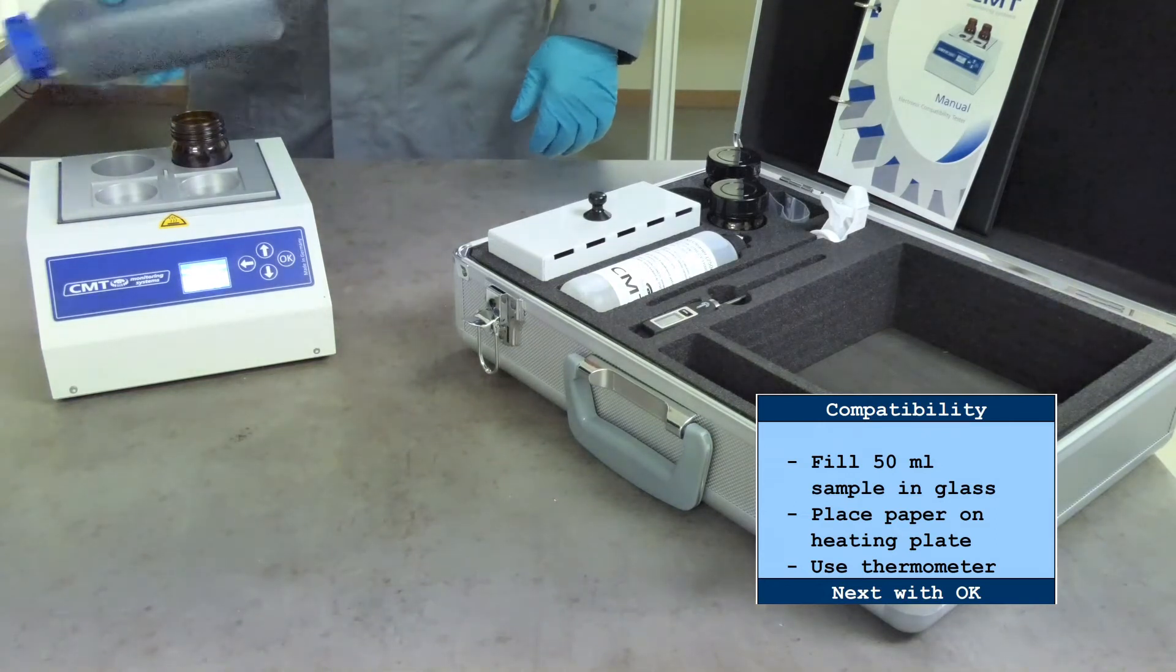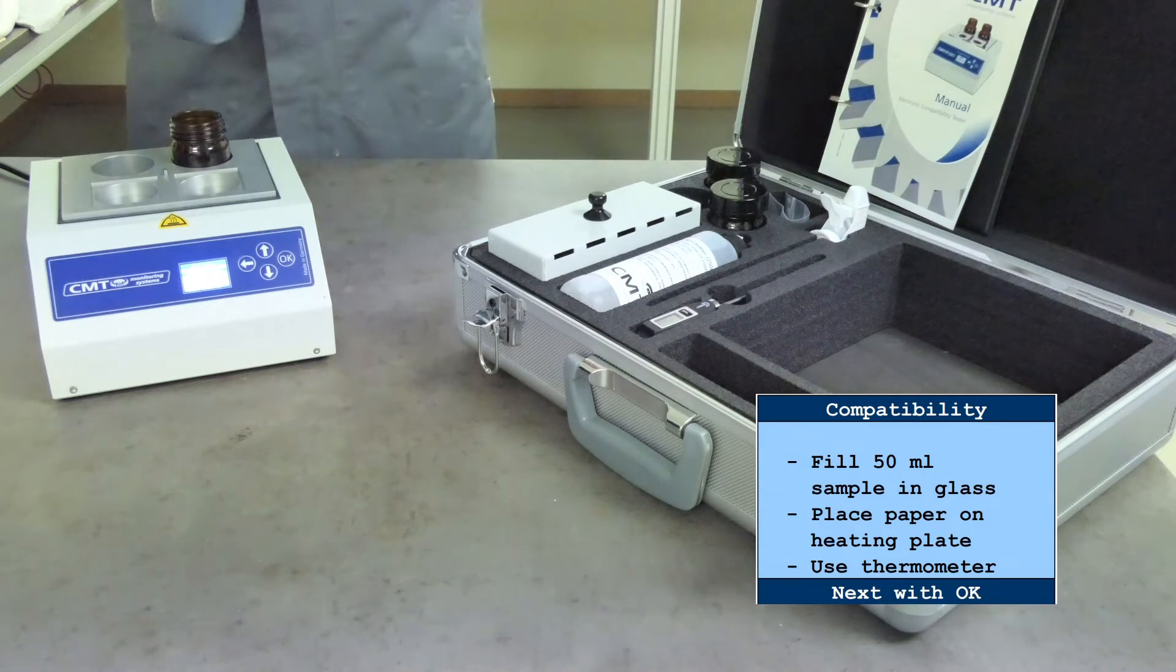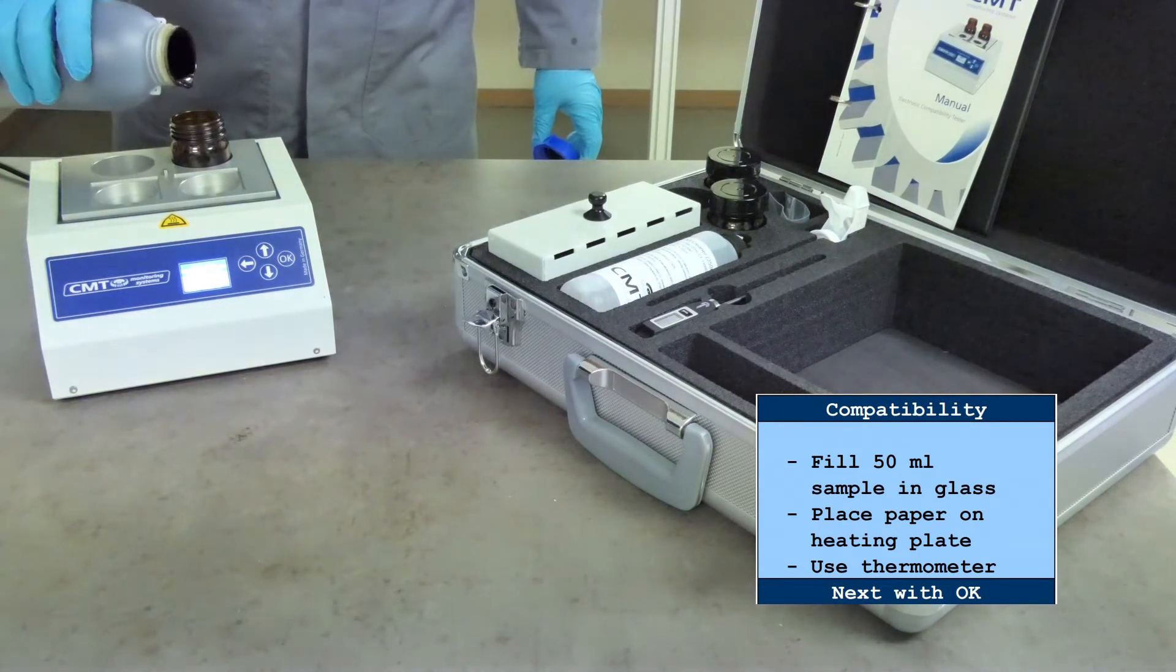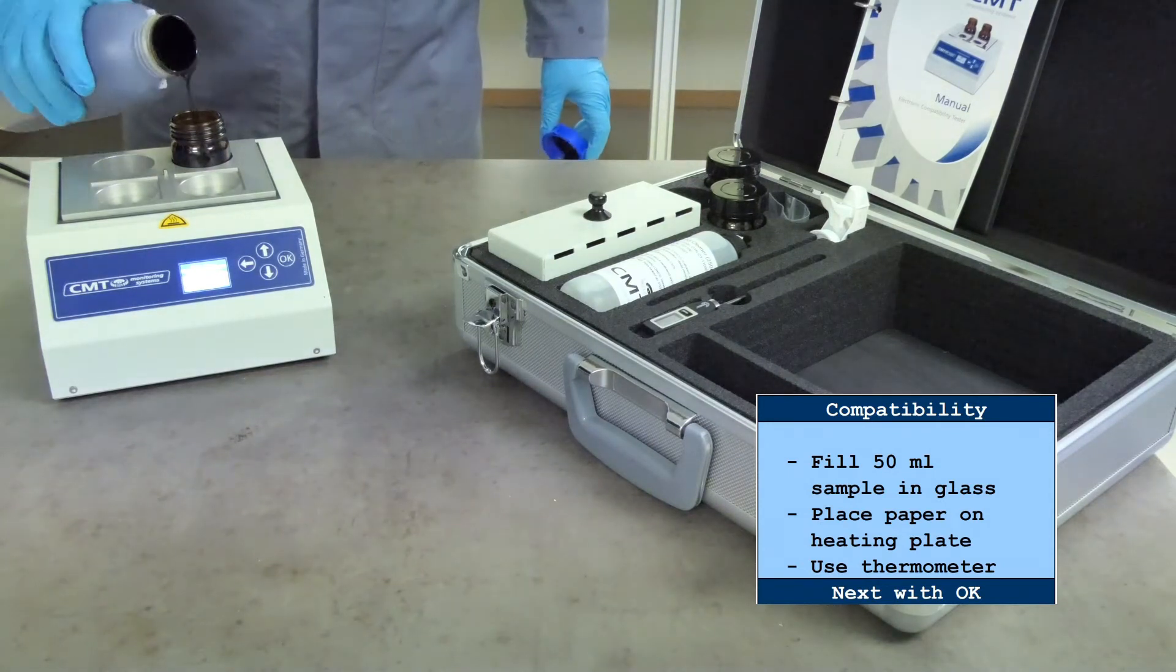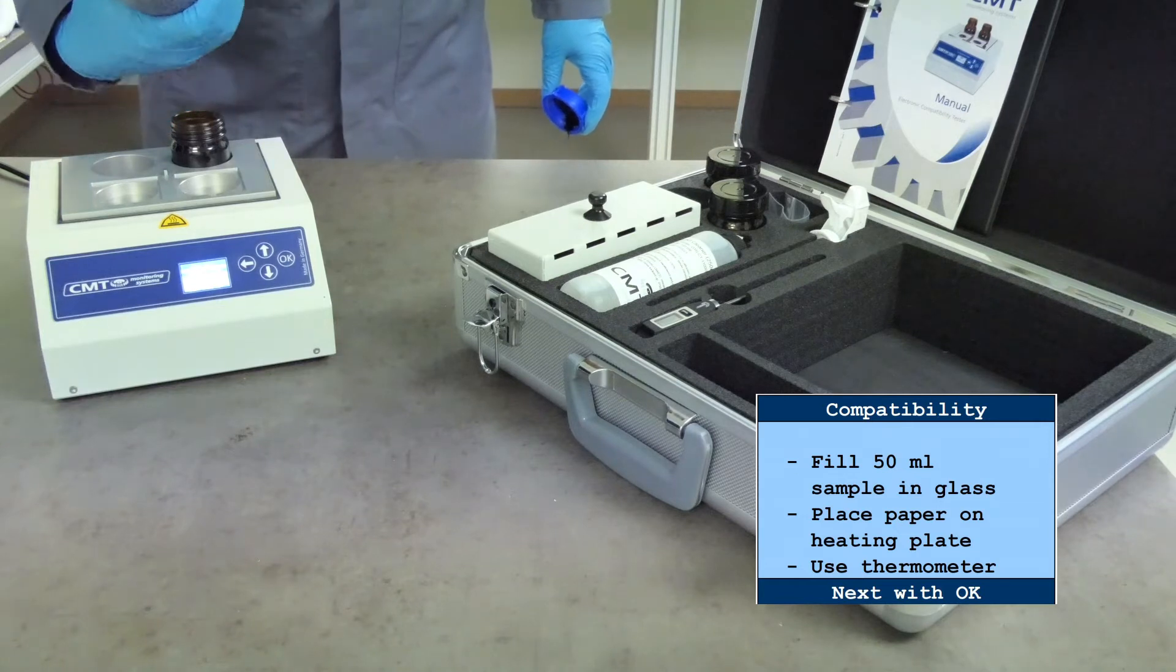If in actual practice, an application requires a blend ratio other than equal parts, conduct the test using the actual blend ratio for the test result to have a good probability of being indicative of the final blend.